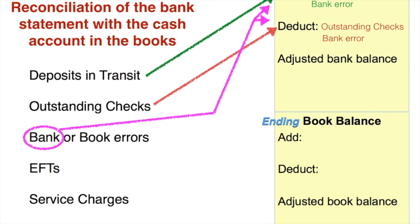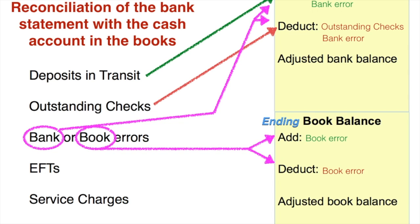You can also have book errors. When you get your bank statement you may see that you recorded something incorrectly on your books. The bank knows about it because they did it right and you didn't, and now you're informed and have to fix your books. Just as a bank error could be an addition or subtraction from the bank side, a book error can be an addition or deduction from the book side of the bank reconciliation.